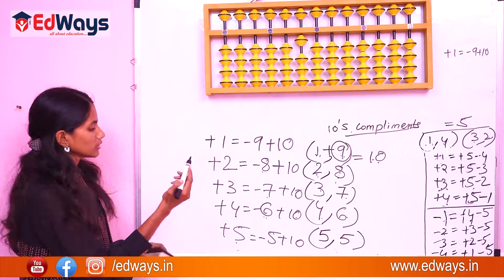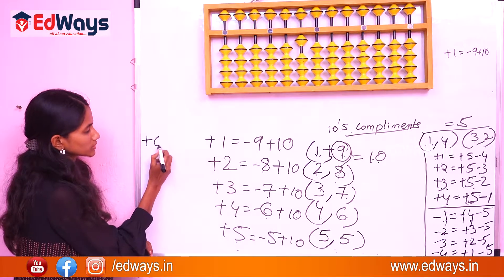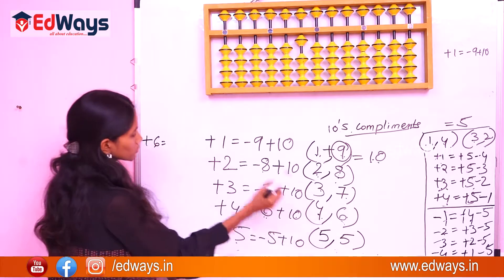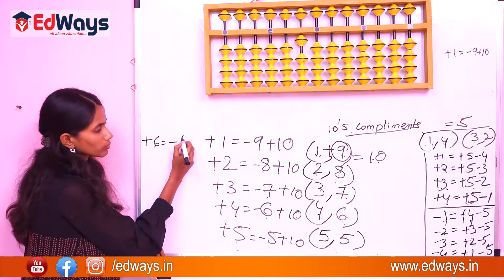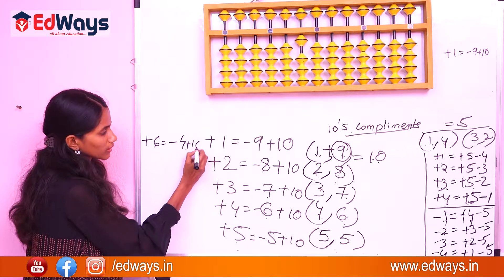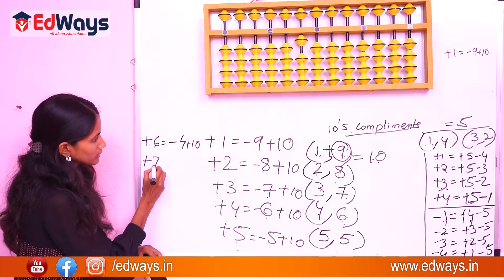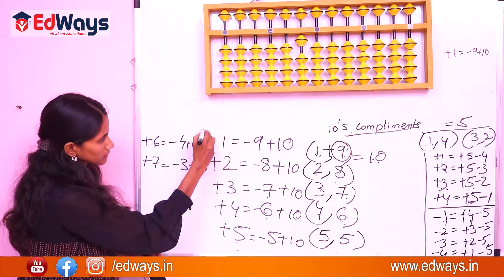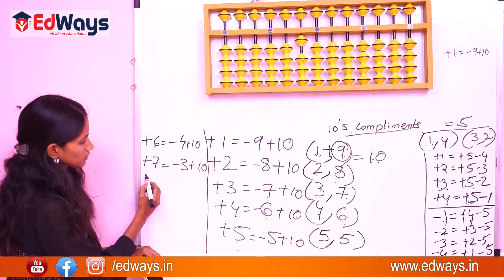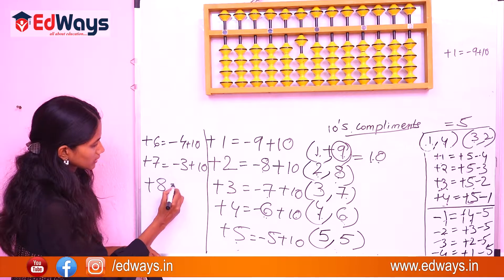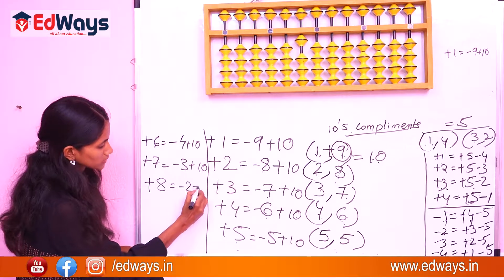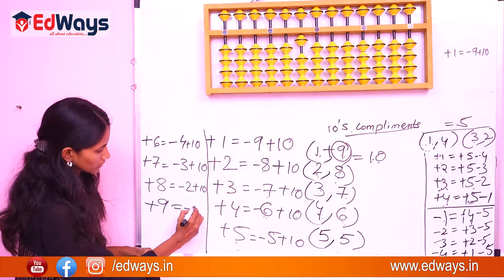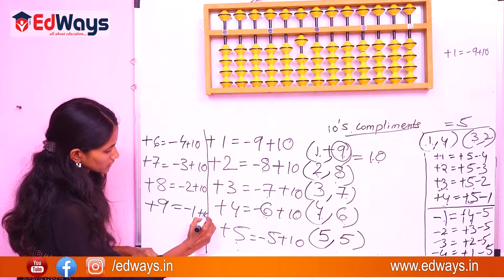The same rule applies for 5: plus 5 equals minus 5 plus 10. Plus 6 equals minus 4 plus 10, since 6's complement is 4. For 7, it is minus 3 plus 10. And plus 8 equals minus 2 plus 10.